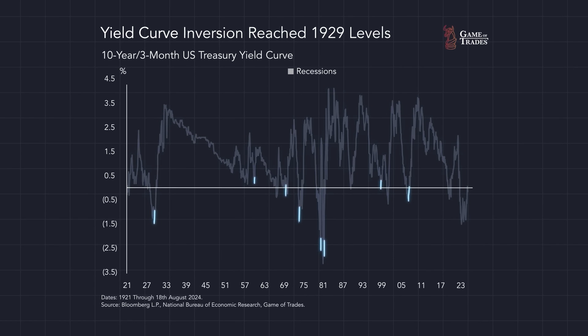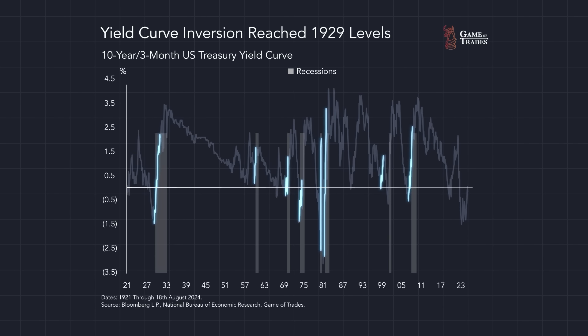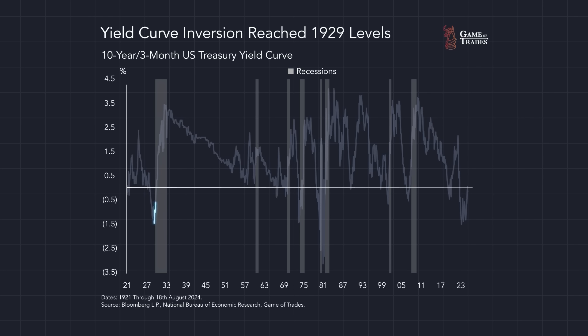In fact, every single time that this signal was triggered throughout history, it was right before an economic downturn in the United States. Even right before the Great Depression in the 1930s, the yield curve uninverted in October of 1929, right at the onset of the Great Depression.